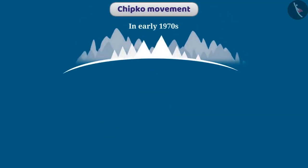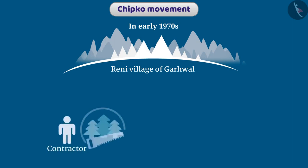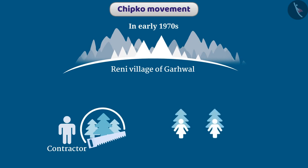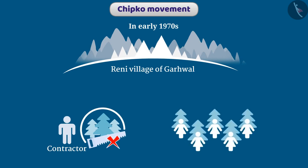In the early 1970s, a significant incident occurred in the Reni village of Garhwal, located in the high mountain ranges of the Himalayas. A contractor was allowed to cut down trees near the village. In protest, the women of the village embraced the trees and prevented the contractor from cutting them. The contractor eventually had to withdraw.